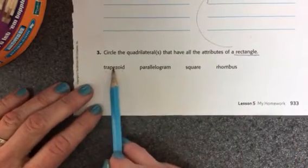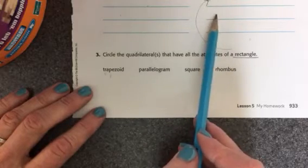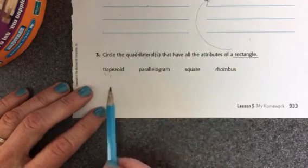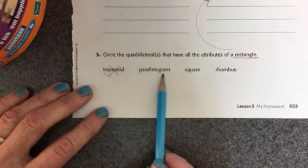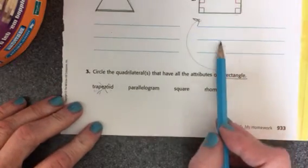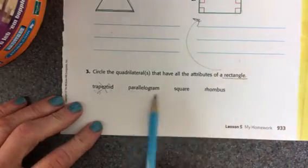Okay, so a trapezoid is not going to match because it doesn't have two sets of parallel sides. Okay, but then you're going to read the definition, read your attributes here, and if they agree, they match, then circle it. Okay, let's look at the back.